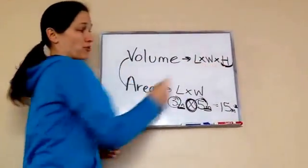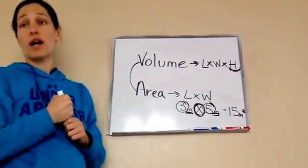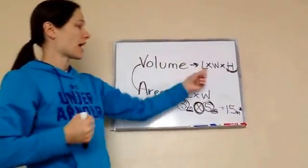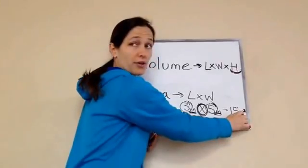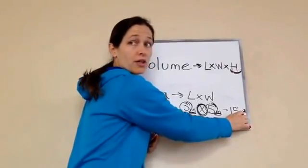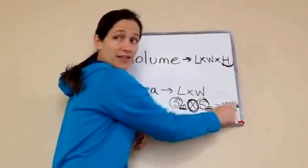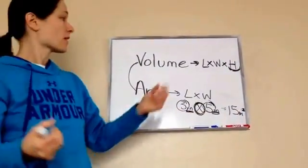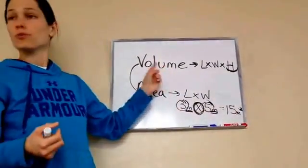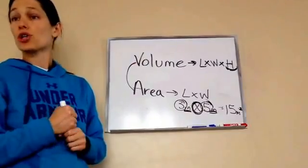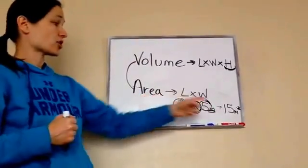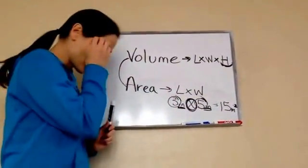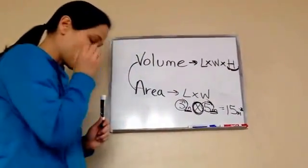Since volume uses three measurements, instead of squared it's going to be cubed. Volume is called cubed; area is called squared. Let me show you an example — I'm going to draw a cube up here.